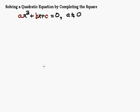In this video we're going to talk about how to solve a quadratic equation by completing the square. We've got a lot of math vocabulary words here, so let's start with this idea of a quadratic equation. A quadratic equation is anything in the form ax squared plus bx plus c equals zero, where a is not equal to zero.